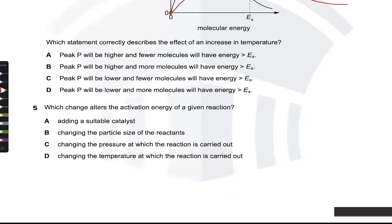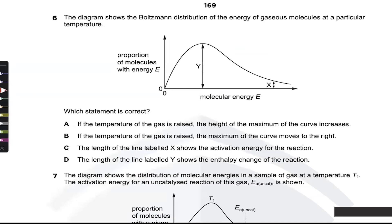Activation energy is specific to a reaction and its pathway — it has a fixed value that does not depend on concentration of products or reactants. A catalyst has the ability to lower Ea because it provides a different pathway with lower activation energy. The answer is B. If the temperature of the gas is raised, the maximum of the curve moves to the right — that is the answer.